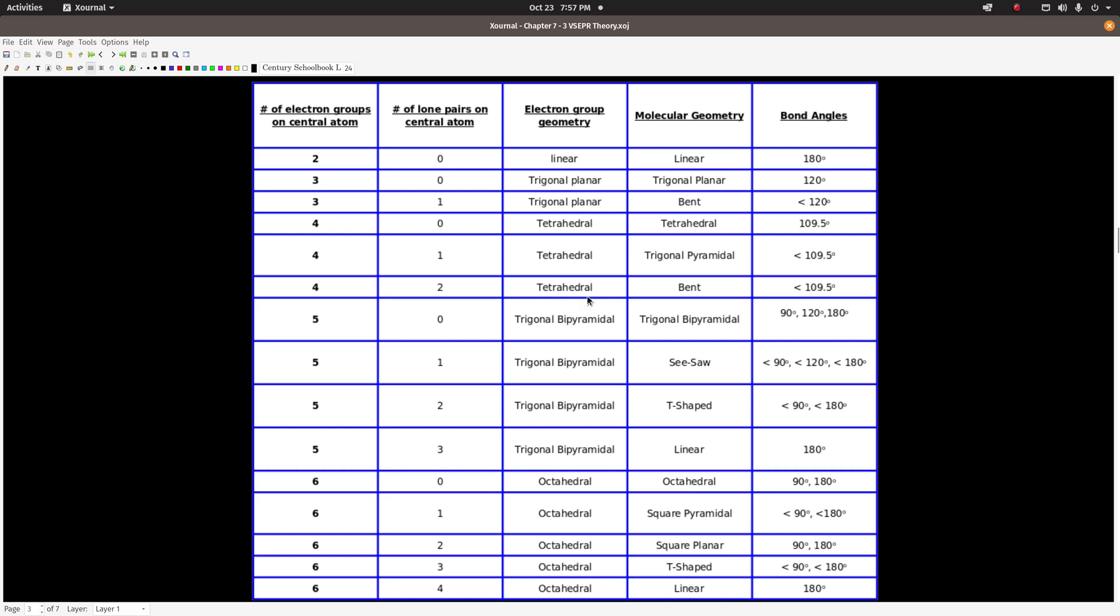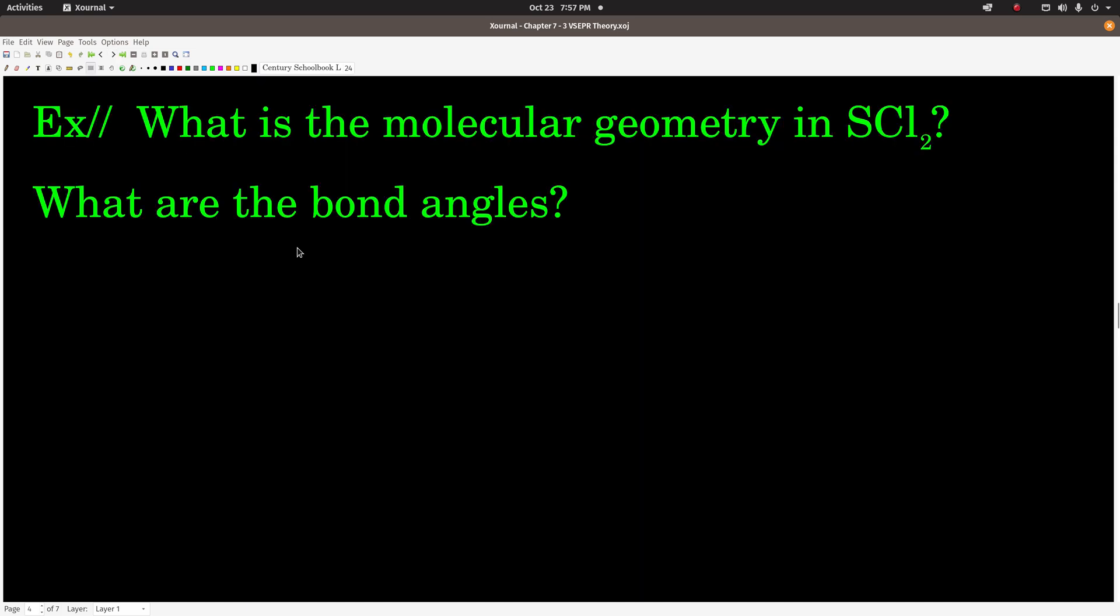So we're going to use this table to do a couple examples. Again, really important table guys—put this on your card. And so you're going to use that table and we're going to figure out the molecular geometry and bond angles in sulfur dichloride. So why don't you guys give that a shot, come on back when you're done.